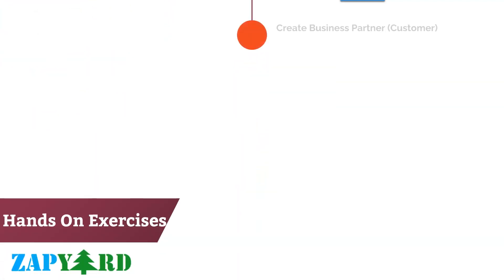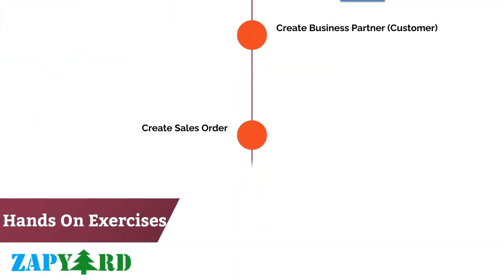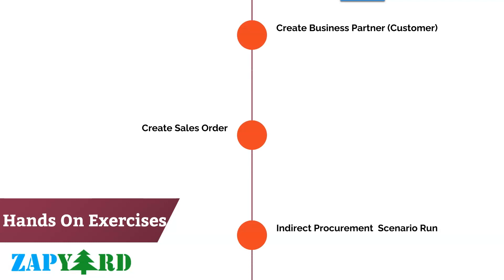Once the business partner and other master data is created, we will create our first sales order. The trainer will showcase different sales scenarios, including the indirect procurement process.